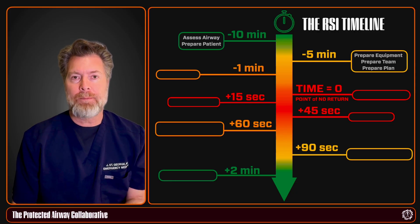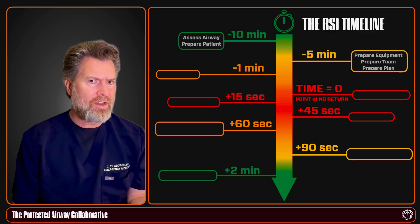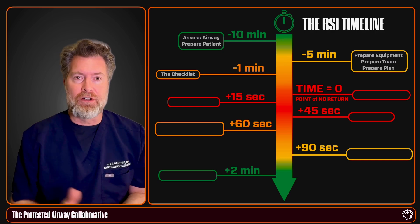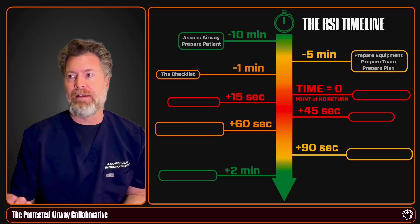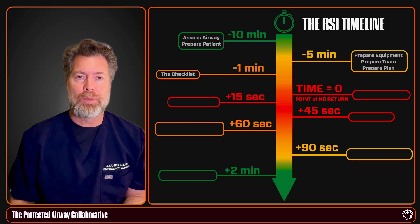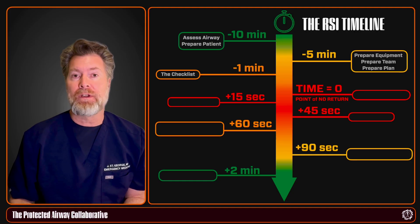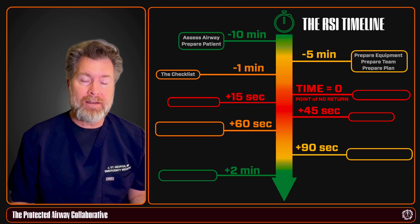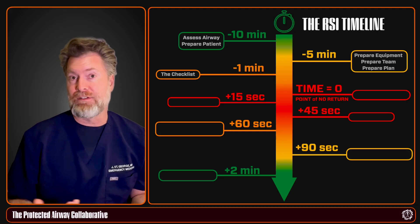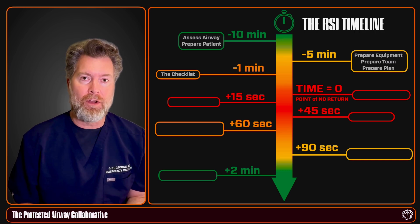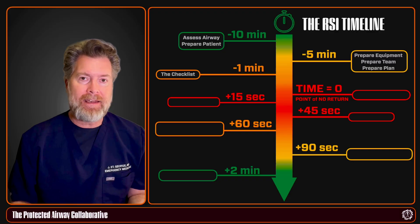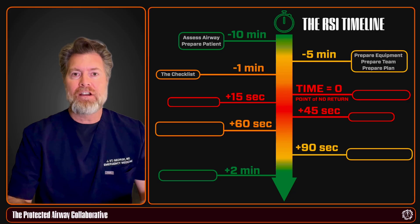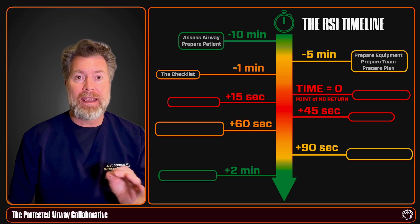Now it's time to tell your team leader and team what you're thinking and what you're about to do. Use a checklist to confirm patient preparation — oxygen mask on, sitting up appropriately, on the monitor, IV working — and verify all equipment is available. Tell your team: this is my plan, this is what I'll do first, if that doesn't work this is what I'll do next, all the way down through the algorithm to the can't-intubate, can't-oxygenate scenario where you would perform a surgical airway. That shared mental model must be discussed with the team before any medications are given.